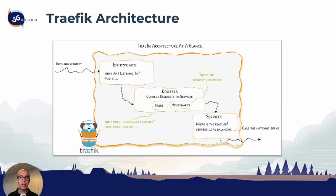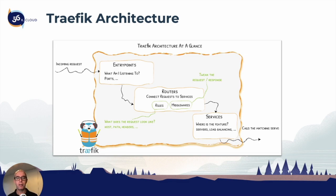Traffic monitors the entry points for any incoming requests and then connects them to routers. It could be one or many routers, and each router has rules. These rules look at the entry points — for example, if a request comes in for 'who am I', it checks the rule: do you have a 'who am I' rule? If yes, then it assigns the request to the service 'who am I'.